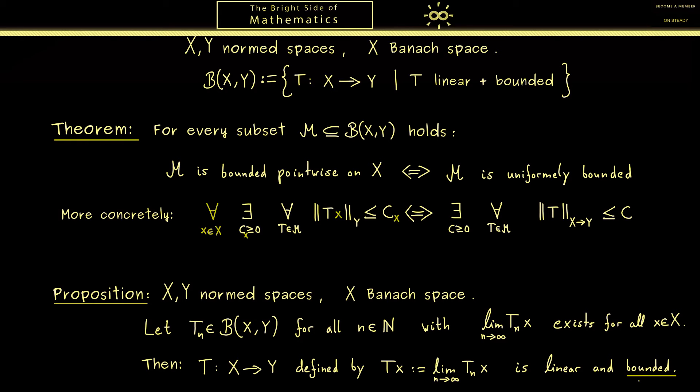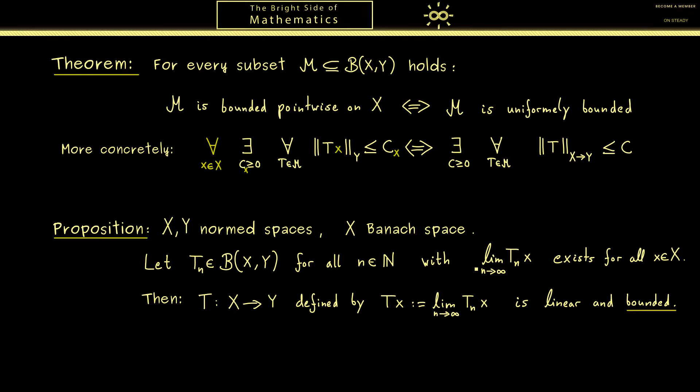Okay then let's write down the proof which is very simple because we can use Banach-Steinhaus. As I already told you, boundedness is the interesting part and indeed the only thing we really need to prove. The map T is well defined by this definition and it is also linear because we know how to deal with limits.